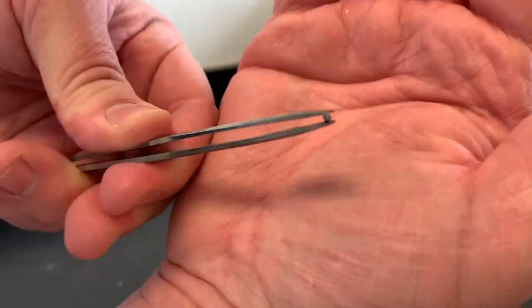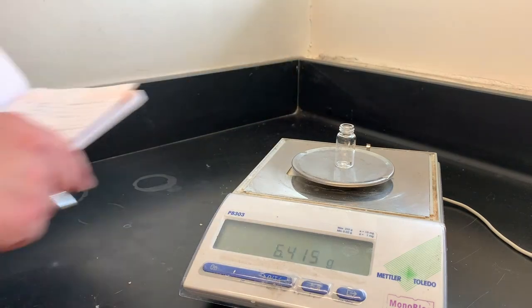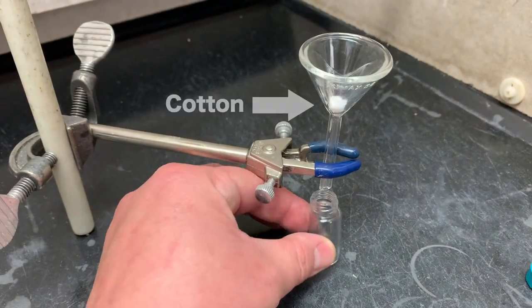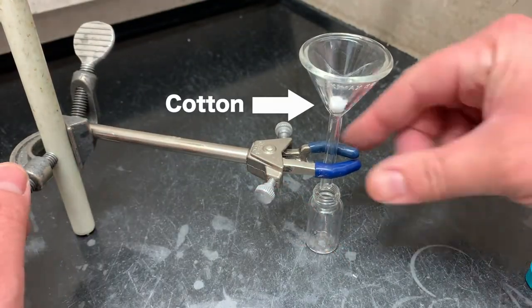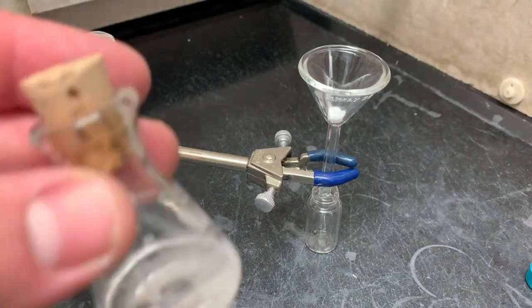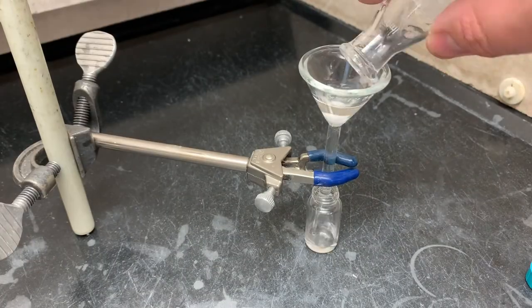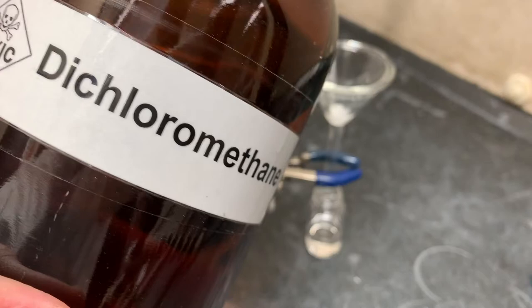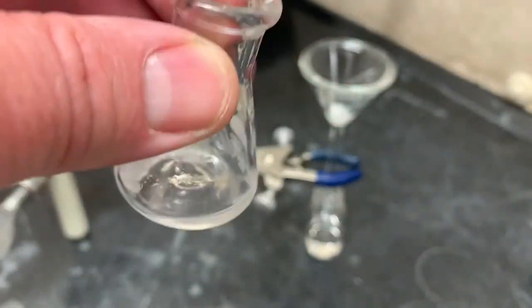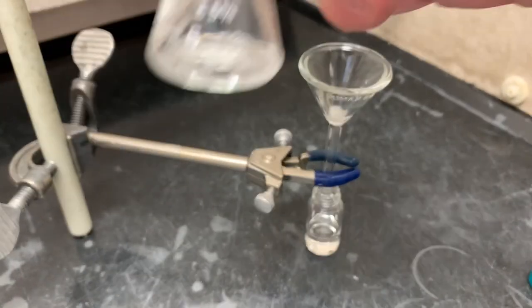Now we want to pre-weigh a vial with a boiling chip, and then to do a filtration, we'll set up a funnel with a small piece of cotton rolled into a ball and pressed in just tight enough to stopper the hole. Pour the dried solution through the filter, and then using DCM, as always, we're going to rinse the previous container with a little bit more solvent, swirl, and then filter it as well.